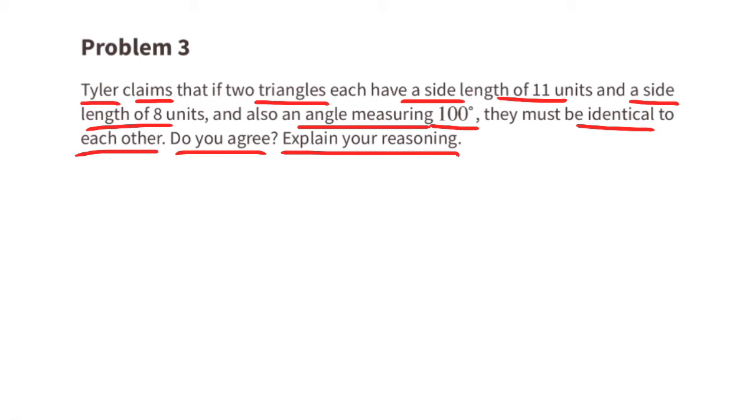Problem number 3. Tyler claims that if two triangles each have a side length of 11 units and a side length of 8 units, and also an angle measuring 100 degrees, they must be identical to each other. Do you agree? Explain your reasoning.